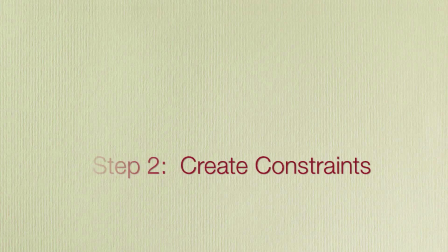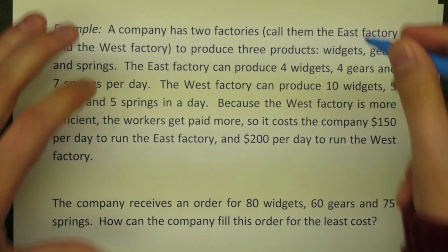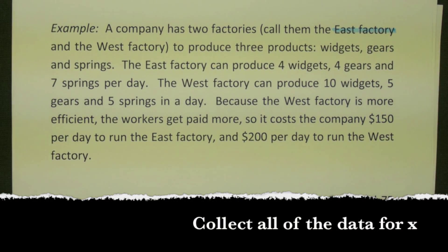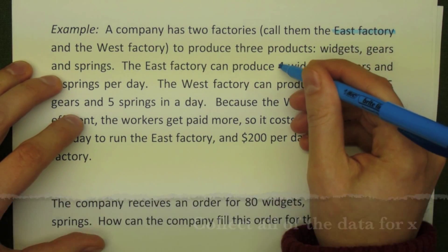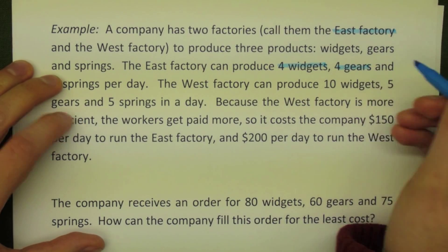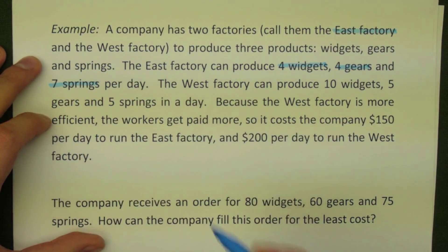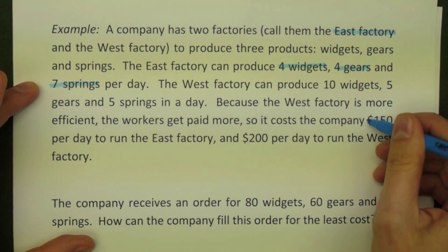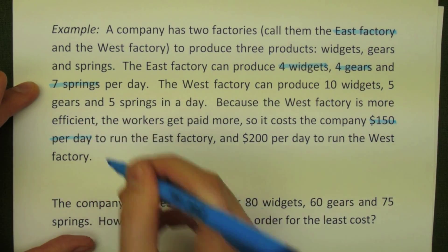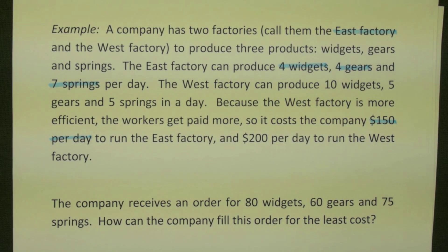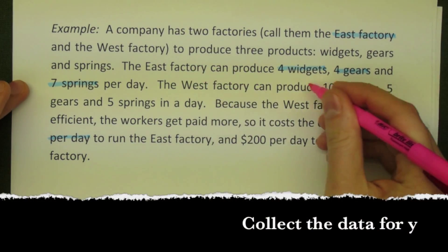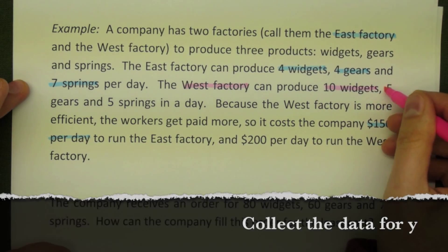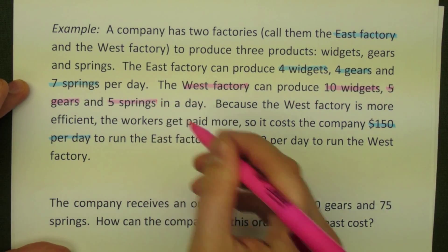Step 2: Create constraints. This will be the most time-consuming process. First, we collect all of the data for the variables that we assigned. The East Factory, which we called X, can produce 4 widgets, 4 gears, and 7 springs per day, and it costs $150 a day to use. We do the same thing for the other variable, the West Factory, and we get the number of widgets, gears, and springs, and the cost.